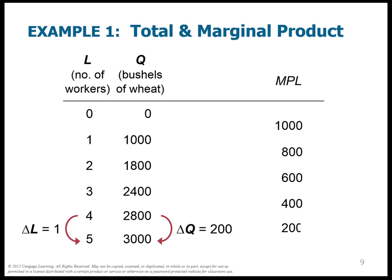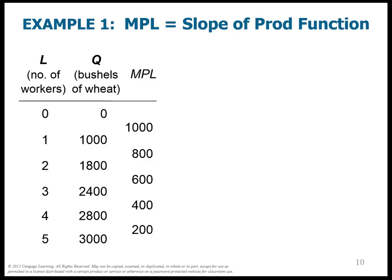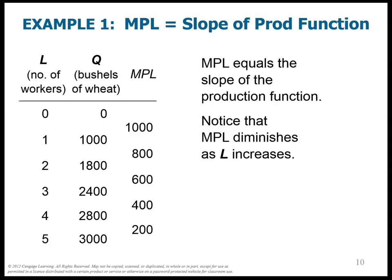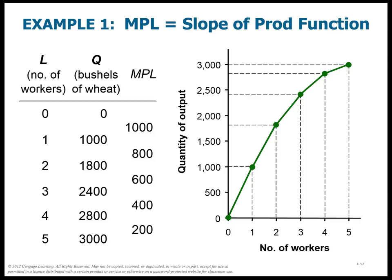Conveniently, I write the marginal product in between the data points — it's not aligned exactly with any single row because it tells you what happens between, say, 0 and 1 workers. The marginal product equals the slope of the production function. At any point, the function starts out being steep and then gets less steep because each additional person is worth less. This is why the production function gets flatter as labor increases — each worker's marginal product of labor is diminishing. The slope starts rather steep and ends up nearly flat, which is the graphical representation of diminishing marginal product.